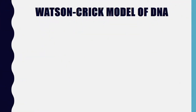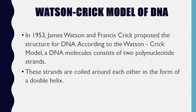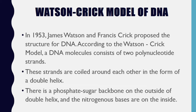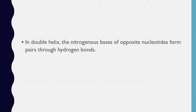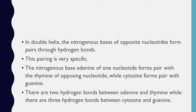Watson-Crick model of DNA: in 1953, James Watson and Francis Crick proposed the structure for DNA. According to the Watson-Crick model, a DNA molecule consists of two polynucleotide strands. These strands are coiled around each other in the form of a double helix. There is a phosphate-sugar backbone on the outside of the double helix, and the nitrogenous bases are on the inside. In the double helix, the nitrogenous bases of opposite nucleotides form pairs through hydrogen bonds. Adenine pairs with thymine, while cytosine pairs with guanine. There are two hydrogen bonds between adenine and thymine, while there are three hydrogen bonds between cytosine and guanine.